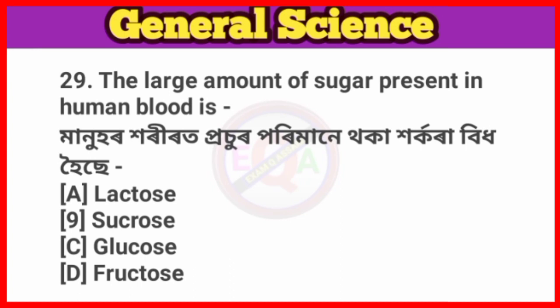Question No. 29. The large amount of sugar present in human blood is? Answer: Option C, Glucose.